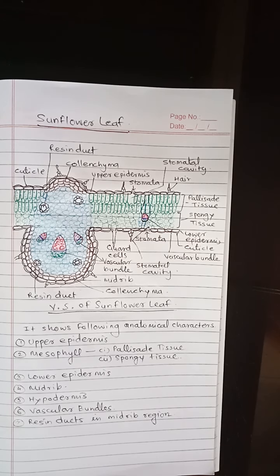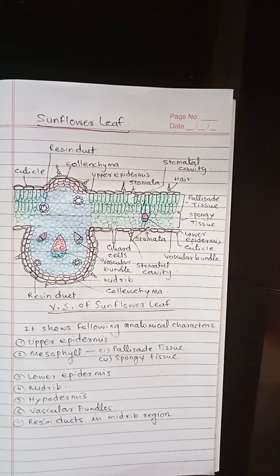In the spongy tissue, there are few layers of parenchyma cells whose walls are thrown into folds forming intercellular spaces, containing also chloroplasts in them. The spongy cells increase the empty space below the stomata on the upper epidermis as well as toward the lower epidermis, forming a sub-stomatal cavity, also known as respiratory cavity.